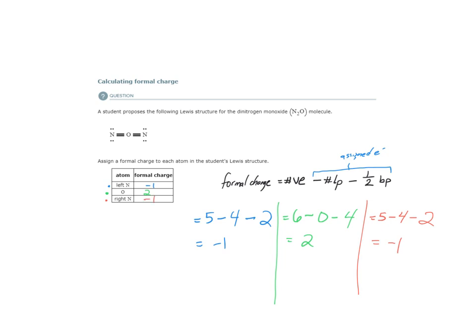Is this Lewis structure the one that is likely to be correct? No, because these formal charges don't seem to be minimized. Formal charges of plus or minus two are highly unlikely for an atom. And we don't have any formal charges of zero. Most likely the correct Lewis structure will be the one that has the minimized formal charges.